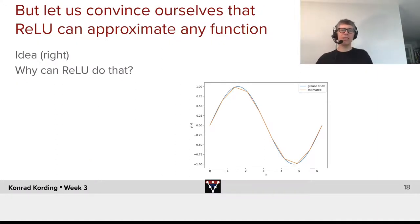But let us convince ourselves in the case of ReLU that it can approximate any function. So what's the idea here? If we can take a function, we take its values at each integer, and I can of course make that grading be smaller and smaller, then the estimation that we have here in orange gets to be similar to the blue ground truth one. We can clearly do that.